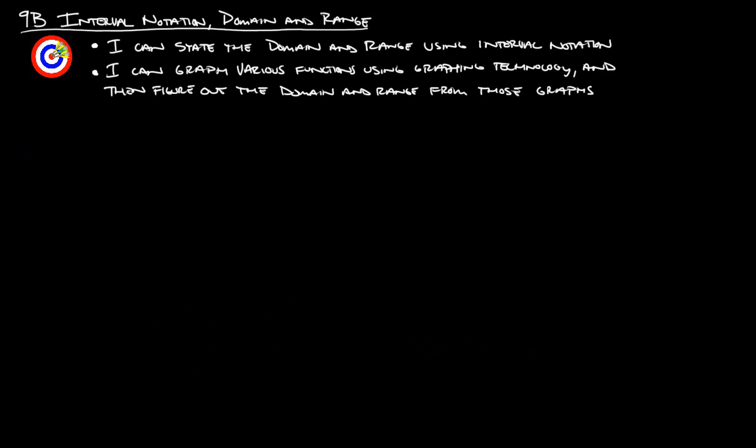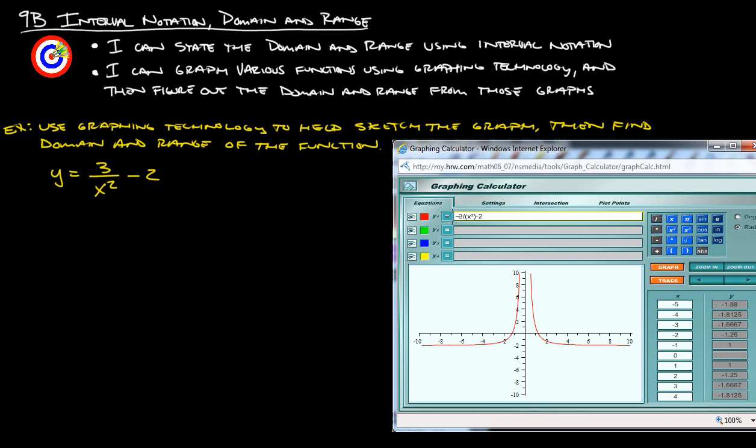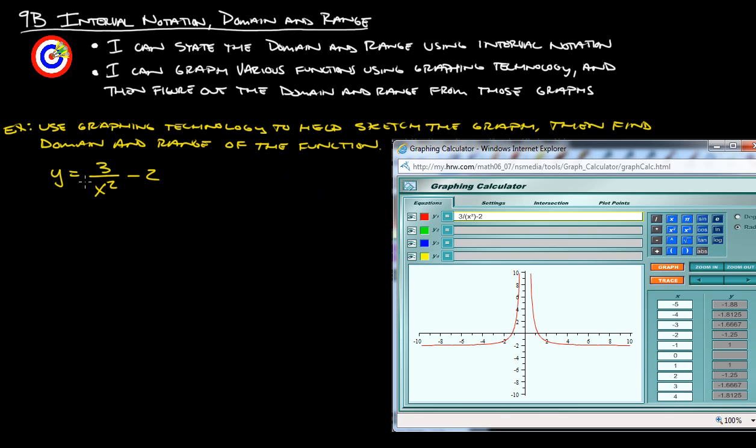Now let's take a look at some other examples here. This is not actually in your book, this is just an extra one I think would be helpful. Using graphing technology to help sketch the graph, then find domain and range of the function. So you've got this crazy looking thing here that you're probably not sure what that looks like, but again, it says use graphing technology. There should be some graphing calculators here available at school, but you can also do this at home. There's lots of free graphing calculator emulators online. If you just type in online graphing calculator, one that I used for this example was the online graphing calculator at Holt-McDougal. I picked that one and this thing will pop up.